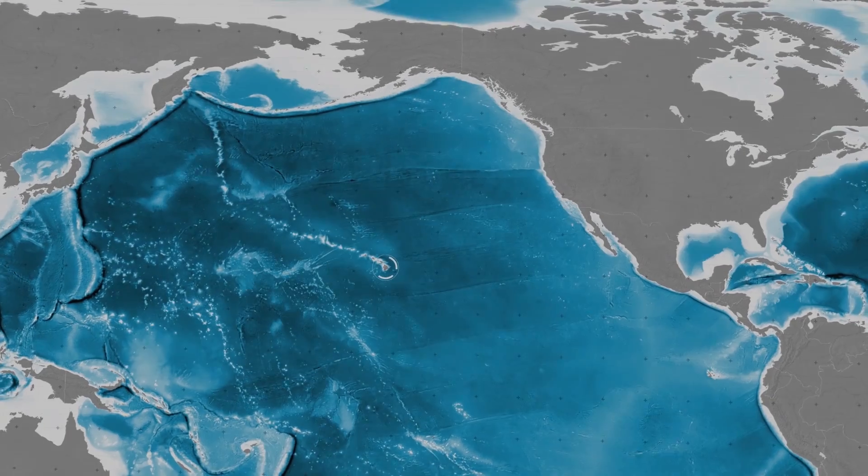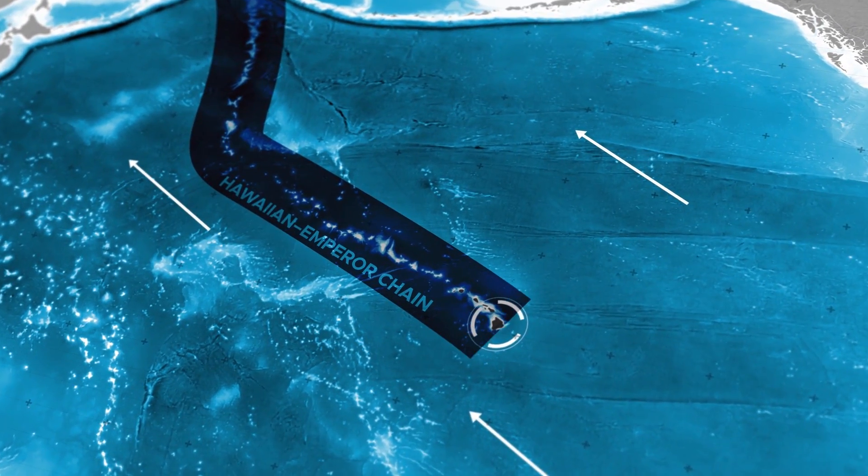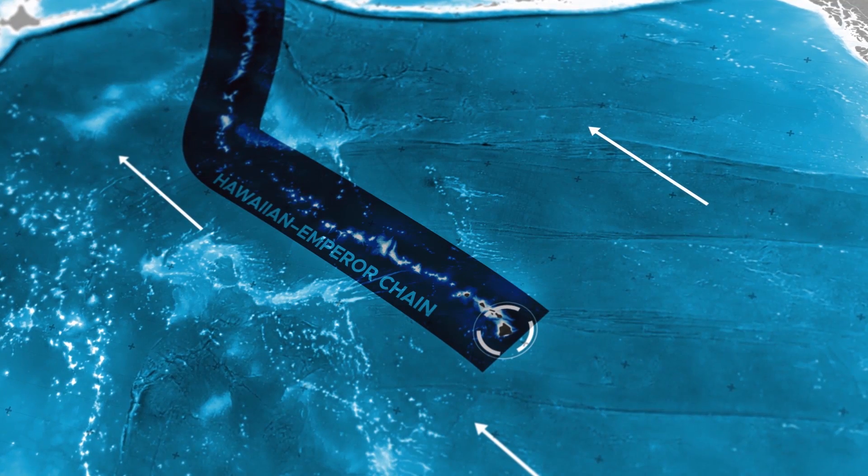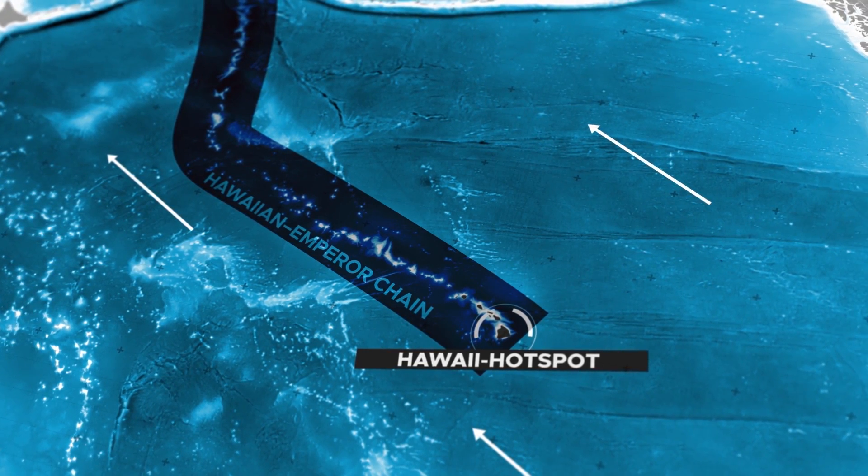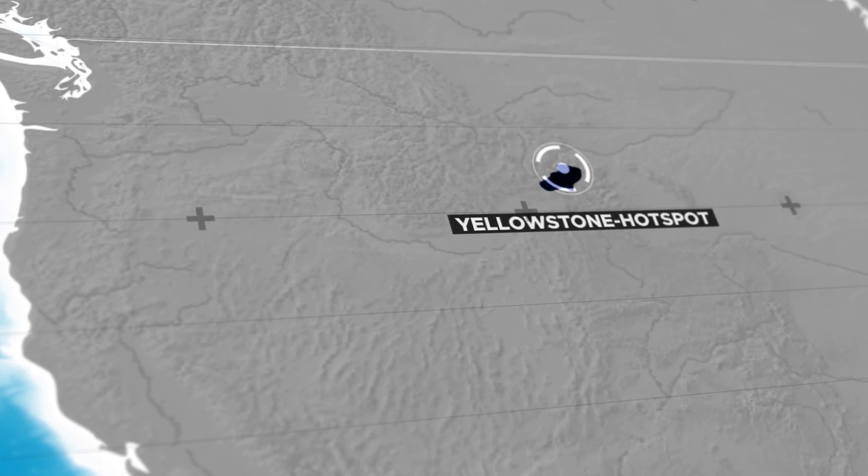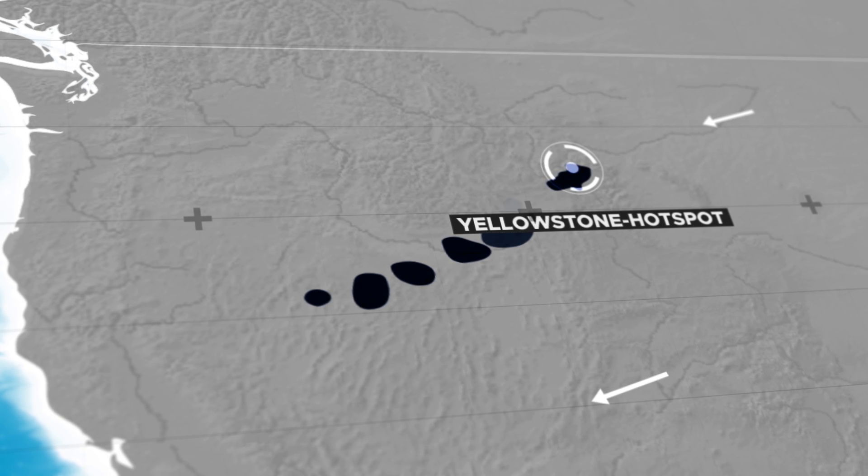This explains for instance the formation of the Hawaii-Emperor chain, a chain of around 130 dormant seamounts stretching over 5,800 kilometers across the Pacific plate, like a string of pearls, with the Hawaiian islands at the end. Other hotspots follow a similar pattern. Yellowstone, for instance, has over the last 15 million years slowly moved eastward as the North American plate moved westward over the hotspot.